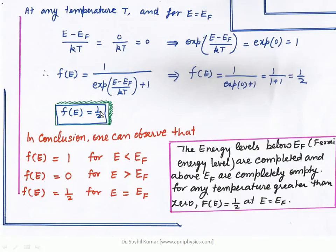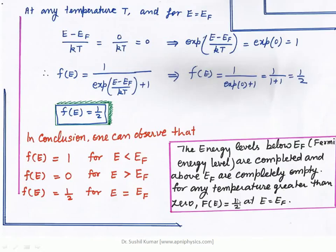There are three situations related to the Fermi-Dirac distribution function: when E < EF, when E > EF, and when E = EF. The first two conditions apply at absolute temperature zero. In the third case, temperature may be anything but the energy equals EF. So: energy levels below EF are completely filled, above EF are completely empty; for any temperature greater than 0, F(E) = 1/2 at E = EF — these describe when states are filled, empty, or half filled.